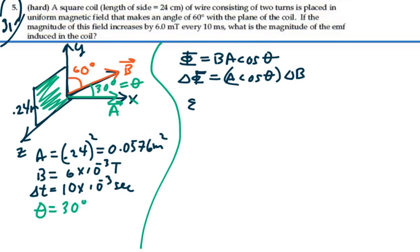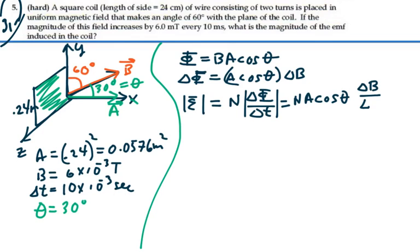So if we're looking for the average EMF, that is going to be equal to the number of turns times the change in flux over the change in time. And so that's going to be equal to the number of turns times the area times the cosine of theta times the change in magnetic field over the change in time.